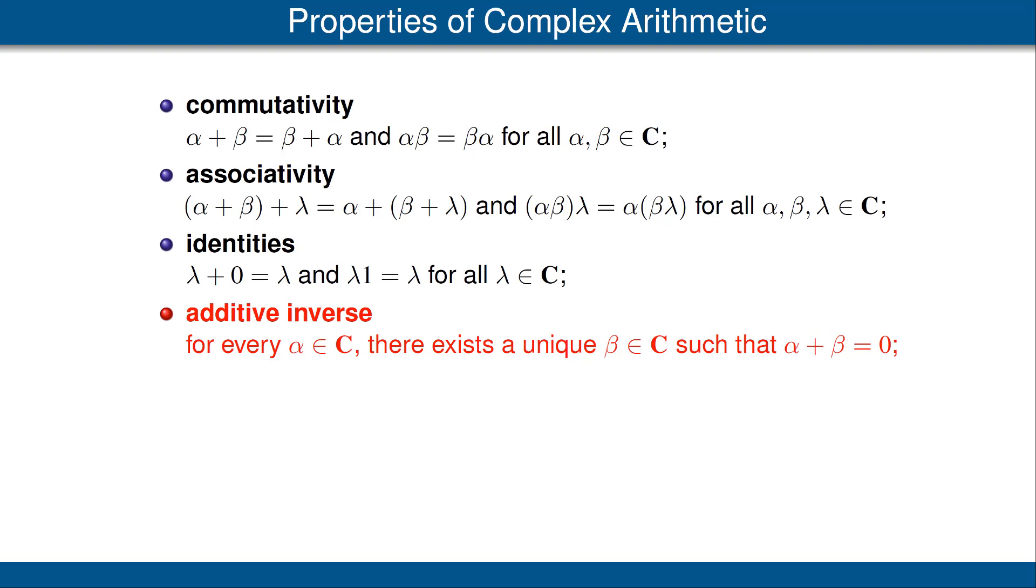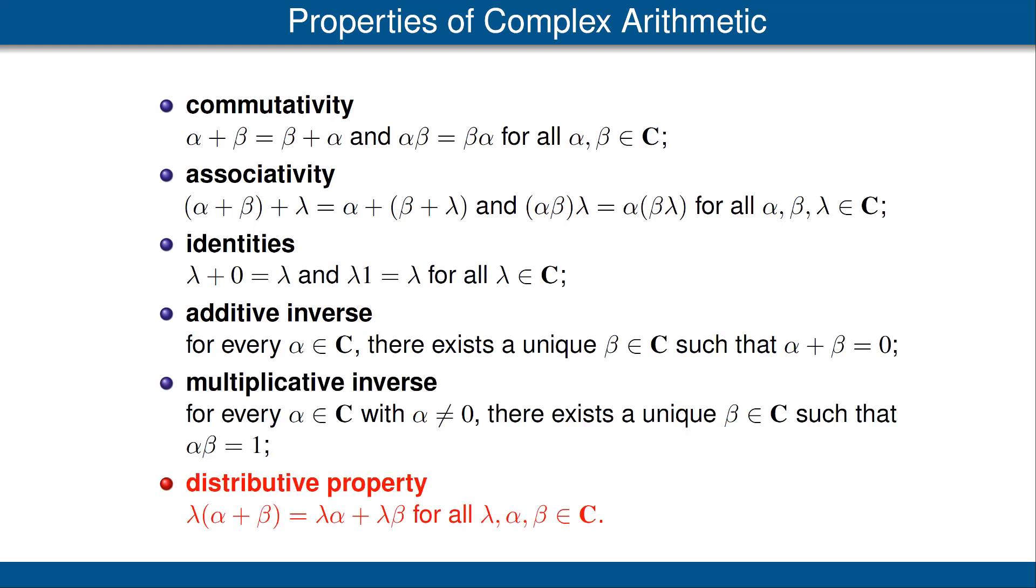Every complex number alpha has an additive inverse, which we denote by negative alpha. Every complex number alpha, except 0, has a multiplicative inverse, which we denote by 1 over alpha. The usual distributive property holds for multiplying the sum of two complex numbers by a complex number.